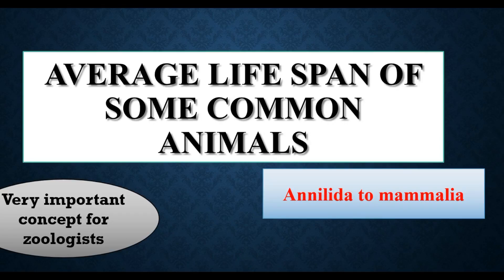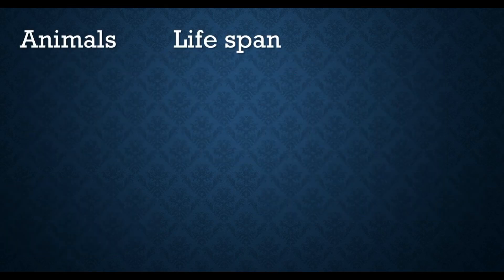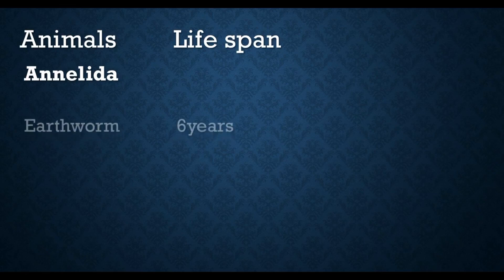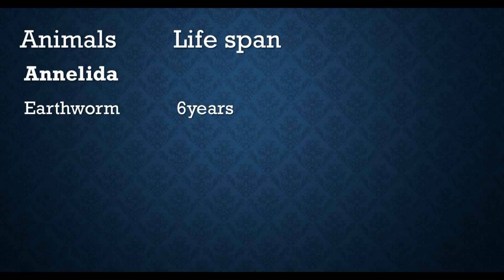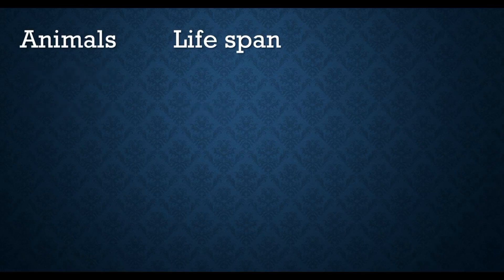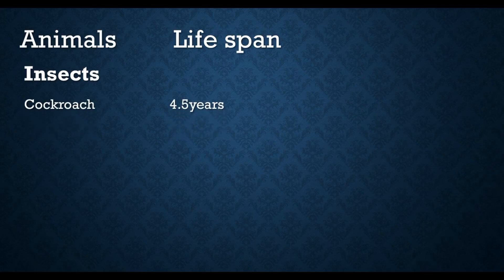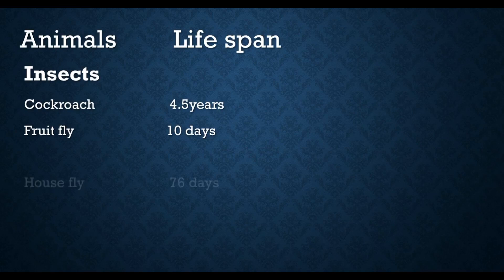Let's start. First, we will talk about Annelida. Earthworm lifespan is 6 years. Next are insects: cockroach lifespan is 4.5 years, and fruit fly lifespan is 10 days.